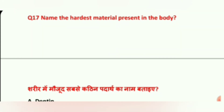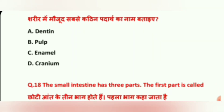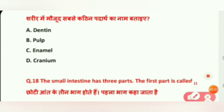Question 17: Name the hardest material present in the body. Options are: A, Dentine; B, Pulp; C, Enamel; D, Cranium. The correct answer is Enamel.